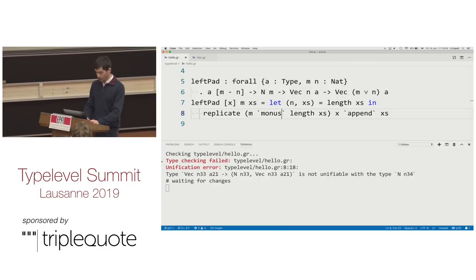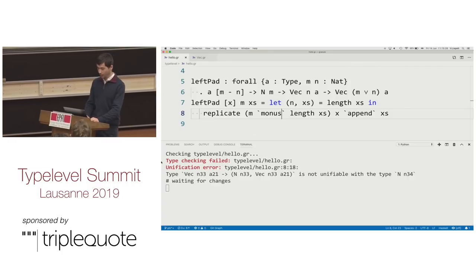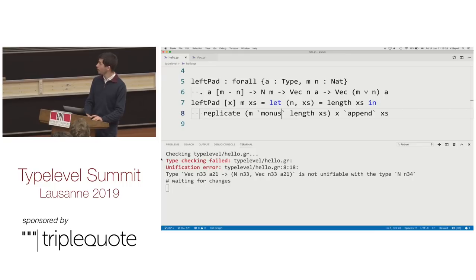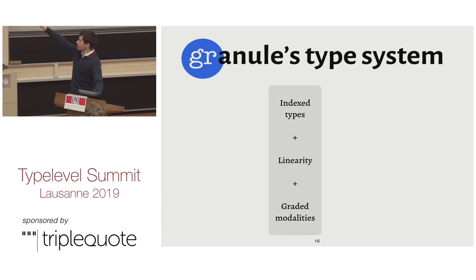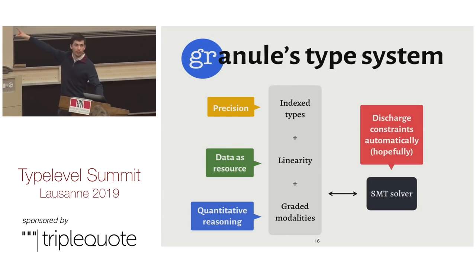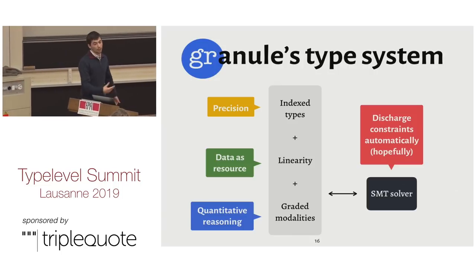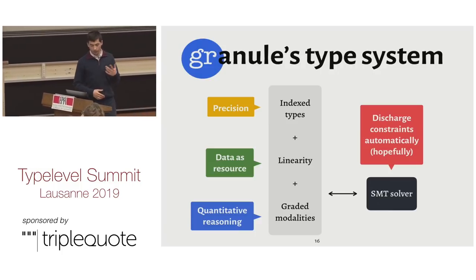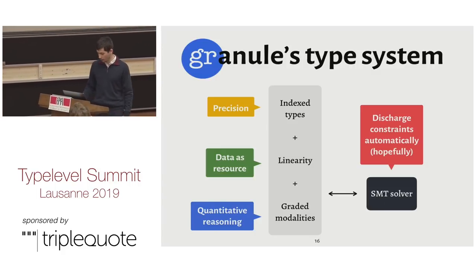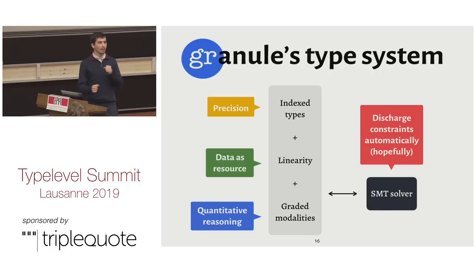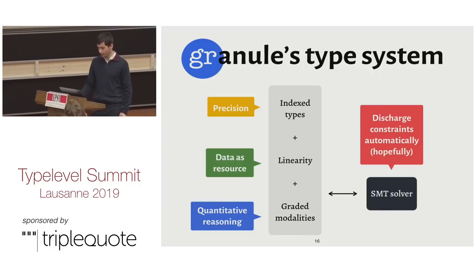Let's go back to slides. I was going to talk about these lovely semi-rings, which Martin already told us about. Quick overview of Granule's type system: with index types, linearity and graded modalities. We use an SMT solver — Z3 — which hopefully discharges our constraints over things like natural number polynomials. They're not decidable, but they seem to work really well for the things we've been considering so far. And you don't have to do the clunky manual things like in Agda or Idris.